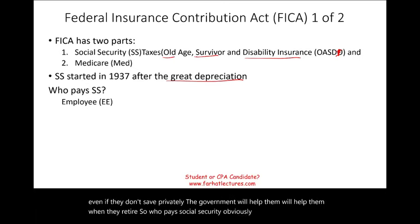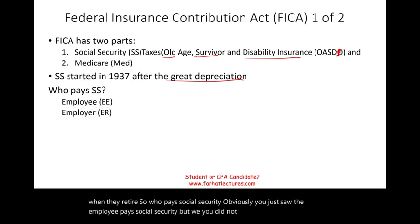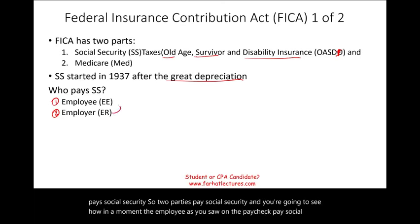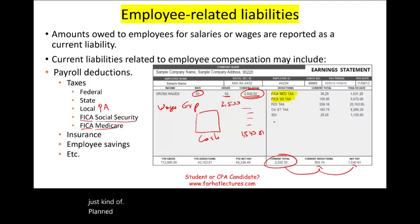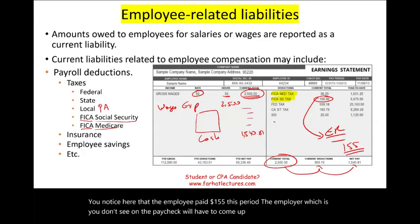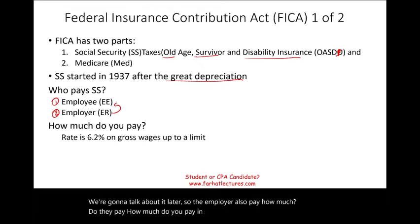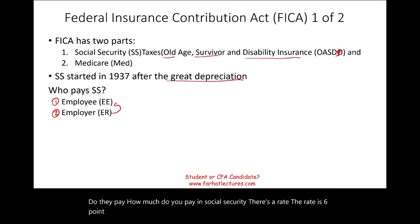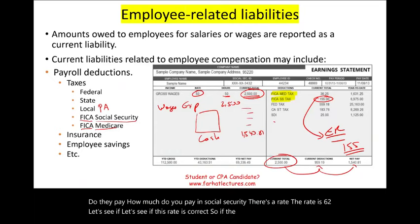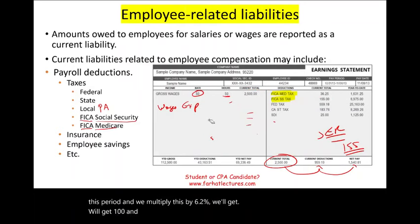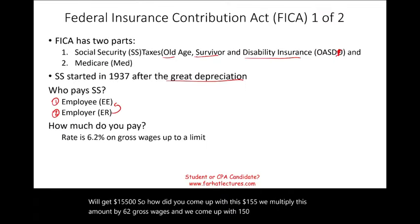Both the employee and the employer pay Social Security. The employee paid $155 this period, and the employer must also come up with $155. The rate is 6.2%. If the employee earned $2,500 this period and we multiply by 6.2%, we get $155. This rate could change but usually does not.